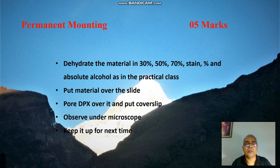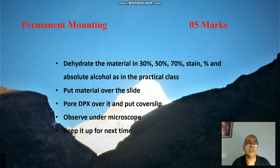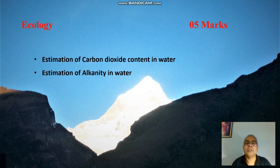The next thing is making a permanent preparation, again 5 marks. For permanent preparation, you first take the tissue and dehydrate it through various grades of alcohol — 30%, 50%, 70% — and then stain it if required. Then by putting the material on the slide and with the help of DPX and a coverslip, you can observe it under the microscope. This work is worth 5 marks.